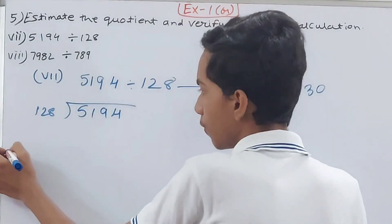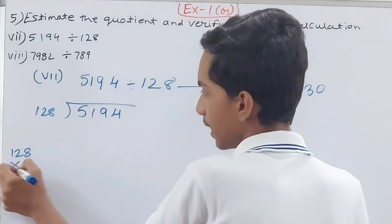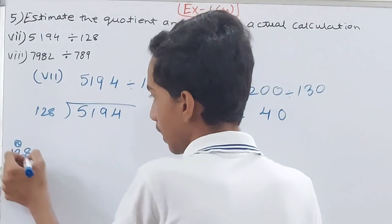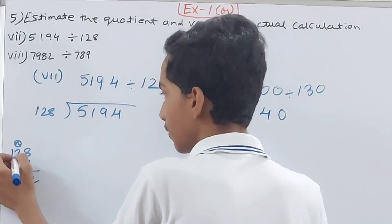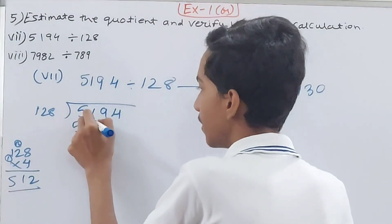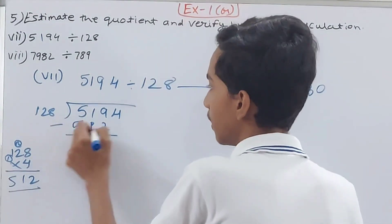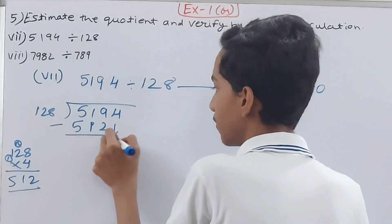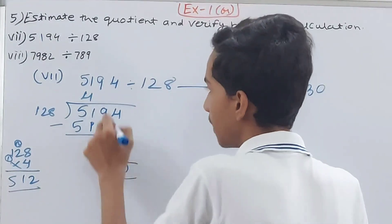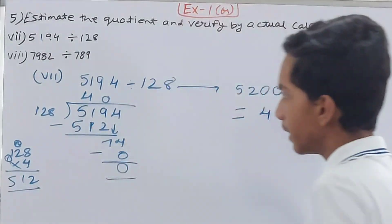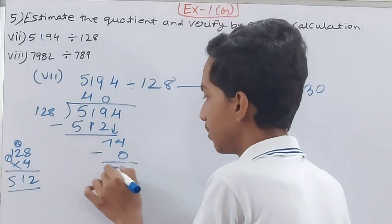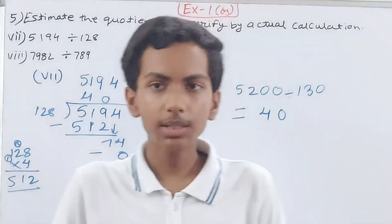For the actual 5194 ÷ 128: 128 into 519 — try 4 times. 8 fours are 32 carried over 3, 2 fours are 8 plus 3 is 11 carried over 1, 1 four is 4 plus 1 is 5. So 512. Minus 512, remainder 7. Bring down 4, giving 74. 74 is less than 128, so quotient is 40 remainder 74.